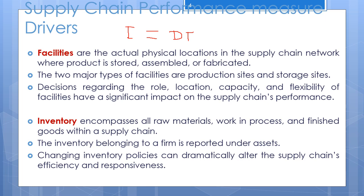As an example of a cycle stock decision, consider a book retailer whose sales average around 10 truckloads of books per month. The cycle inventory decision the retailer must make is how much to order for replenishment and how often to place these orders. The retailer could order 10 truckloads once each month, or order one truckload every three days. The basic trade-off supply chain managers face is the cost of holding larger lots of inventory versus the cost of ordering product frequently.